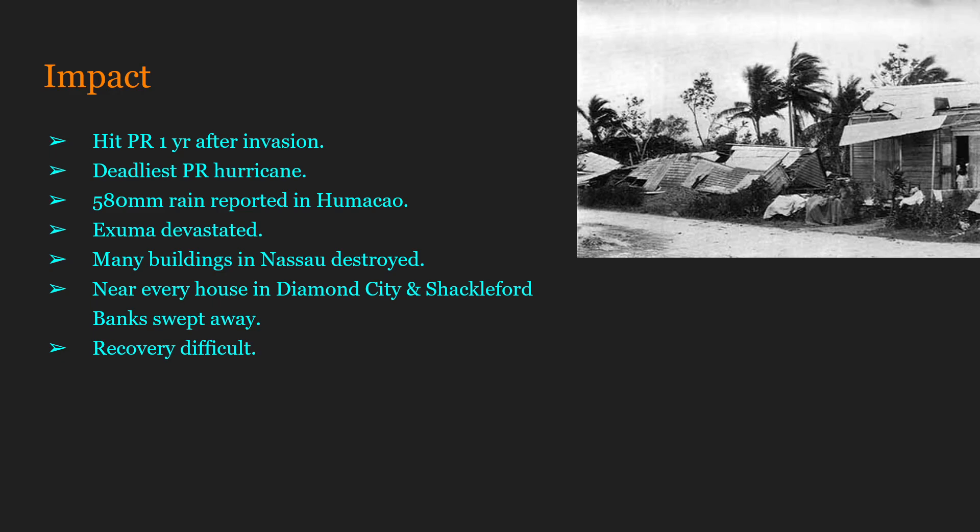In North Carolina, nearly every single house in the communities of Diamond City and Shackleford Banks were completely swept away, causing a relatively large migration inward. These communities would be rebuilt, though they would eventually become abandoned. With infrastructure even today being relatively easy to destroy, imagine how it was in 1899 — the automobile had just been invented, and the Model T wasn't even a thing yet. This made recovery everywhere this hurricane hit extremely difficult.